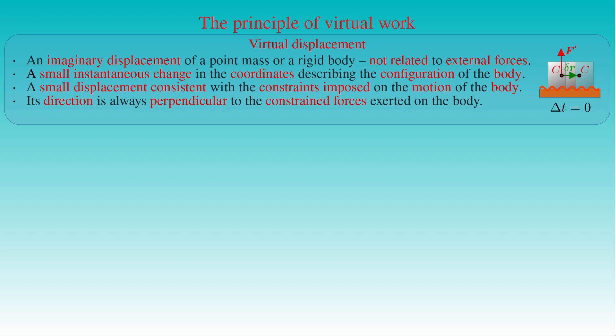As the second example shows, virtual displacements involve not only small translations of a body but also its rotation through a small angle about a given point or axis. The instantaneous displacement of a point of a rotating body is perpendicular to the line connecting the point and the axis of rotation, which is the line of application of the constrained forces fixing that axis. As a result, any displacement due to rotation is also perpendicular to the direction of the constrained forces.